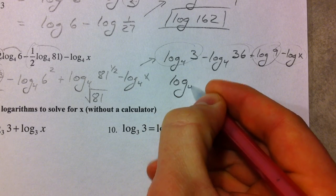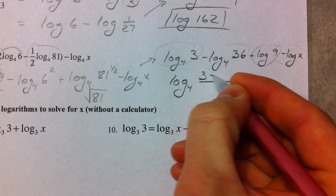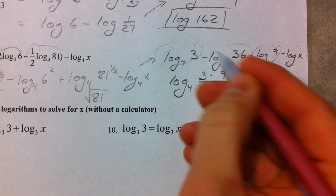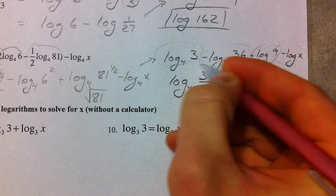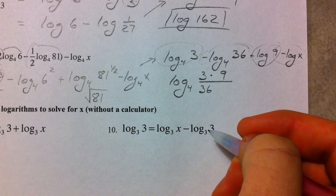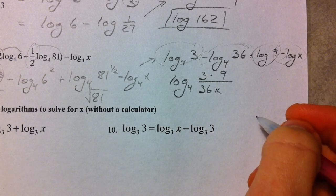So we have log base 4 of 3 goes on top, 9 goes on top, but we've got a negative 36. And if you think of it, this 36 is being raised to a negative 1, and that's why it's being brought down to the bottom, and this x is also being brought down to the bottom.